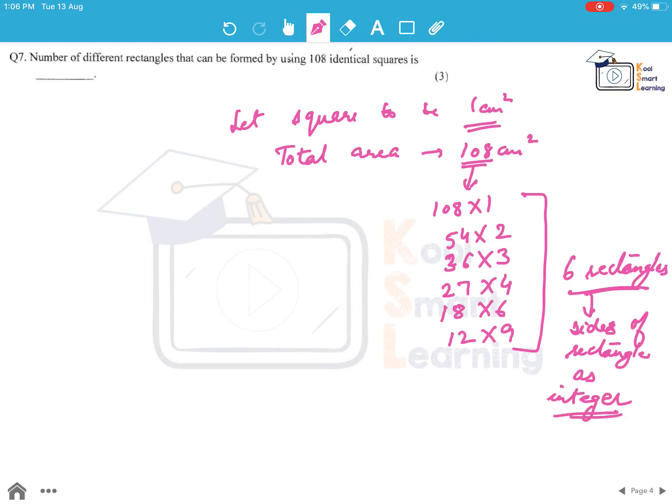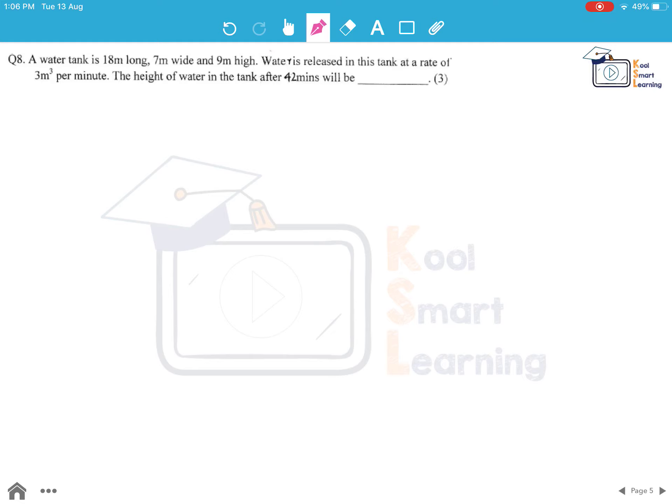Moving to the last question of this session. A water tank is 18 meter long 7 meter wide and 9 meter high. So we have this kind of a tank, water is released in the tank at the rate of 3 meter cube per minute. The height of the water in the tank after 42 minutes is. First of all the volume or the capacity of tank is 7 into 18 into 9 and that comes out to be 1134 meter cube.